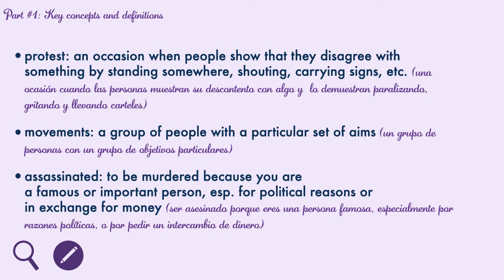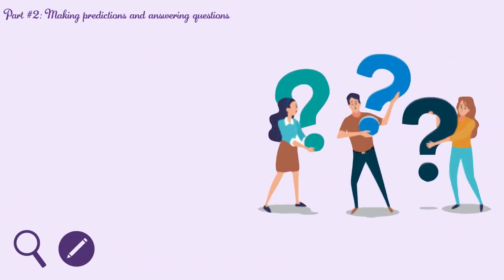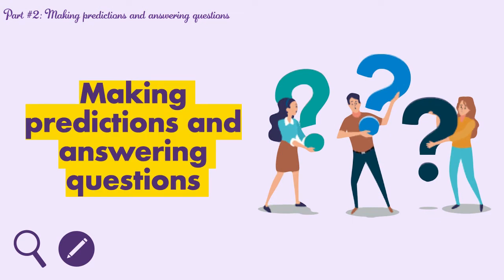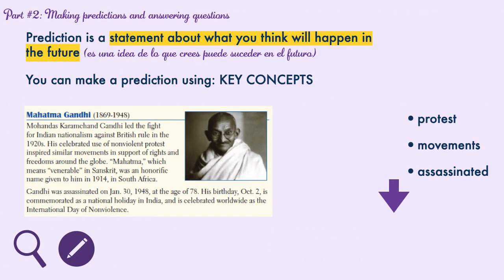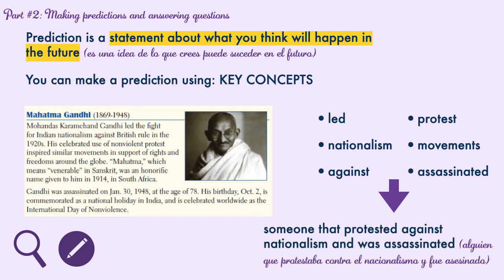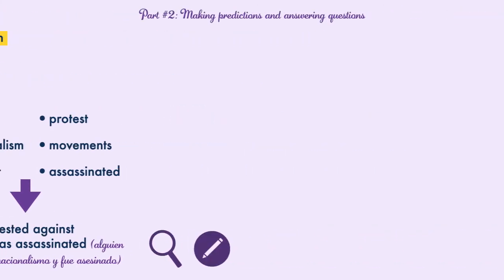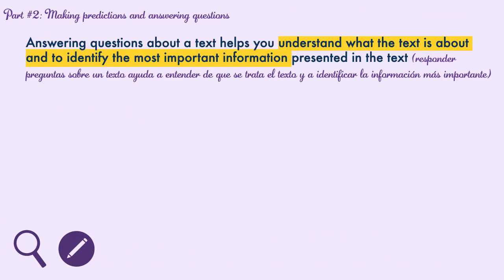With these key concepts we are going to be able to make predictions and answer questions — this corresponds to the second part of the contents. A prediction is a statement about what you think will happen in the future. Using key concepts, you can make predictions. With our six key concepts, we can predict that the text is going to be about someone who protested against nationalism and was assassinated.